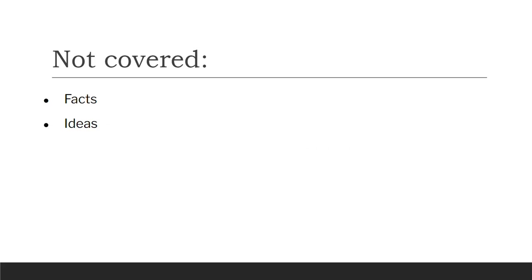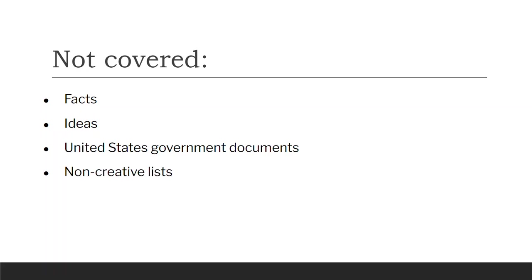There are some things that are not covered under copyright. That includes facts and ideas — so ideas can't be copyrighted. But if I use those ideas to create a painting or a book, the book or painting itself can be copyrighted. US government documents and non-creative lists like phone books are also not covered. And finally, if something was created a long time ago, there are different laws about how much time before it goes into the public domain. A lot of older stuff is now in the public domain, meaning people can use it however they want.